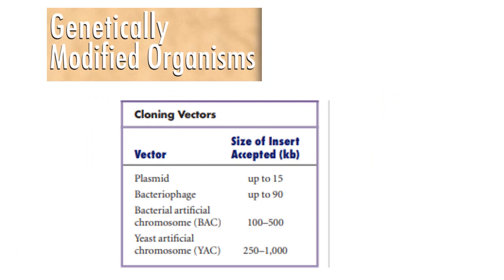Vectors come in different types — it is not only plasmids that can be used as vectors. Plasmids, bacteriophages, bacterial artificial chromosomes (BAC), and yeast artificial chromosomes (YAC) are all vectors. The difference is the insert size they can carry: plasmids can amplify genes up to 15 kb; bacteriophages up to 90 kb; bacterial artificial chromosomes up to 500 kb; and yeast artificial chromosomes up to approximately 1000 kb.